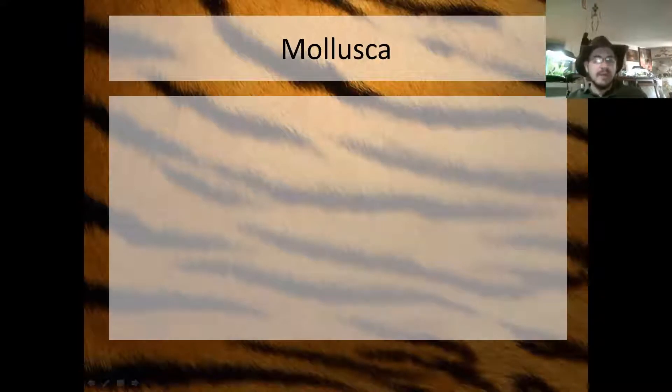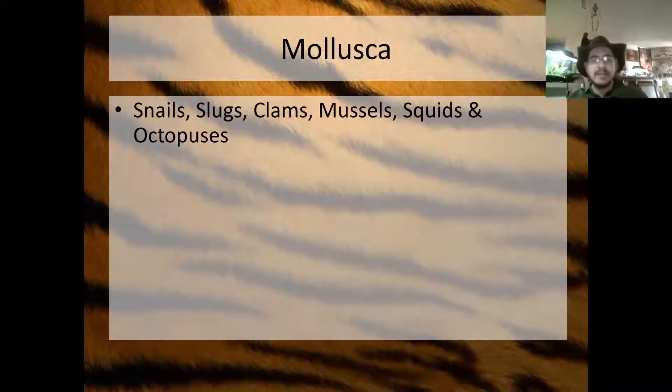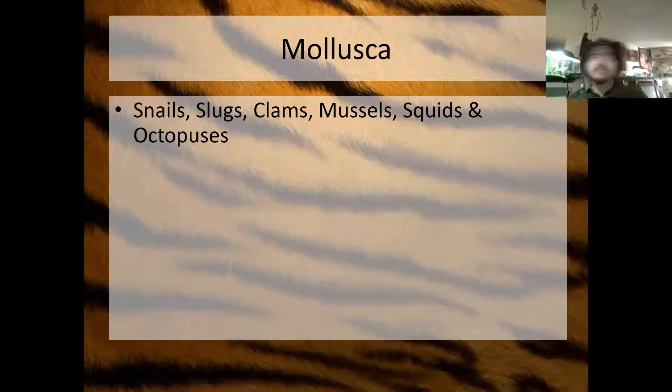Now we're going to talk about Mollusca. Molluscs are snails, slugs, clams, mussels, squids, and octopus.